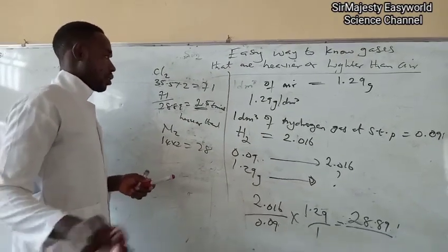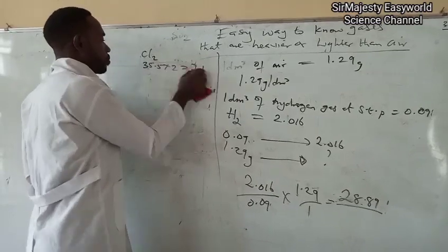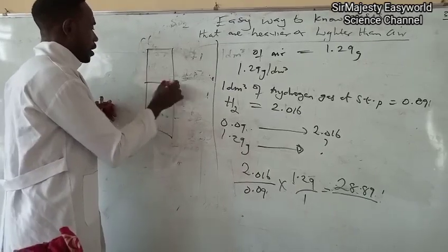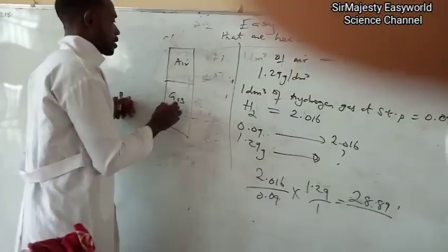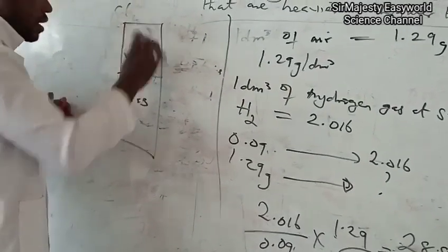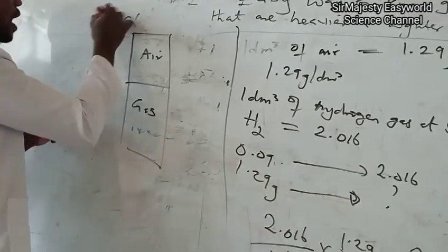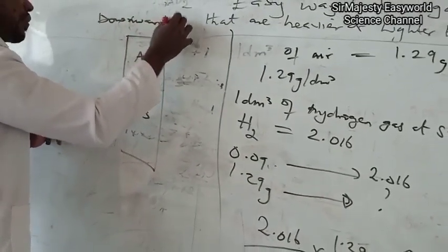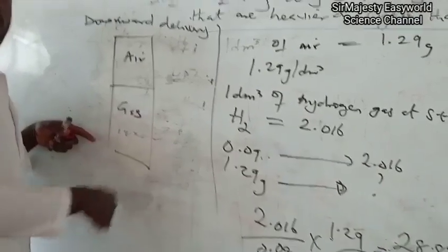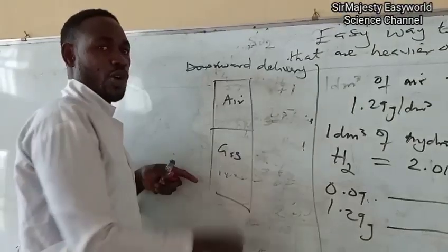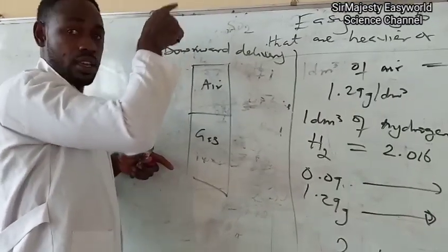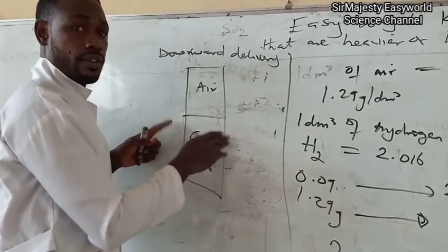Upward delivery means downward displacement of air. If you have this simple drawing here. If this is A for air, then G for gas. You find out that air is on top of gas, which means that this air is lighter and this gas is heavier. So, this is what we call downward delivery, not displacement. Delivery is for gas. The gas is delivered downward and the air is displaced up. So, this downward delivery is the same thing as upward displacement of air. And this is for gases that are heavier than air.